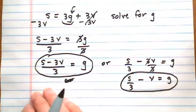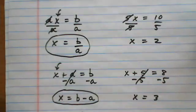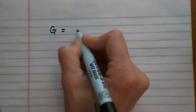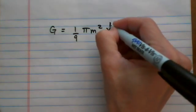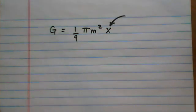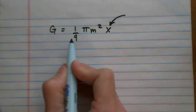Let's try one more. We're following the usual process for solving a linear equation, the exact same steps. We're just pretending that the letters we're not looking for are numbers. Let's say we have g equals one-ninth pi m squared x, and we're solving for x. This one has fractions, so it's nice to get rid of fractions first.